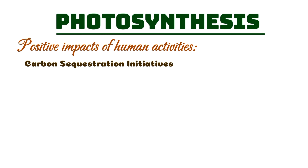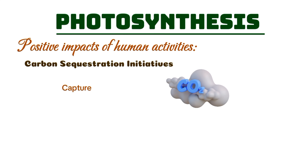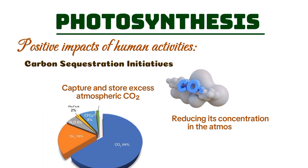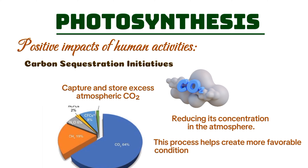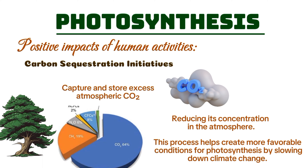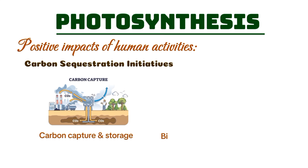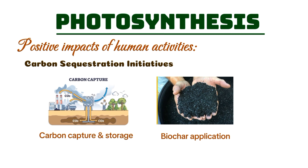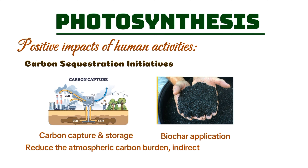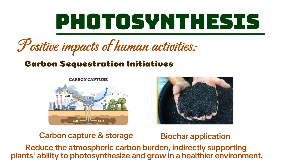Carbon sequestration programs aim to capture and store excess atmospheric CO2, reducing its concentration in the atmosphere. This process helps create more favorable conditions for photosynthesis by slowing down climate change. Projects like carbon capture and storage, and even biochar applications in soil, are examples of how humans are actively working to reduce the atmospheric carbon burden, indirectly supporting plants' ability to photosynthesize and grow in a healthier environment.